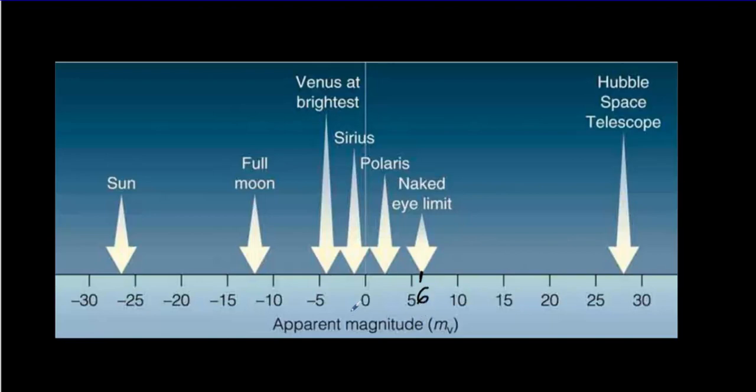But it turns out that the brightest star is a minus one, Sirius. Venus would be about a minus four, a full moon would be about a minus twelve, and the sun would be at minus twenty-six. As we go to larger positive numbers, we're getting things that are more and more faint. The Hubble Space Telescope has an apparent magnitude value of about twenty-eight.